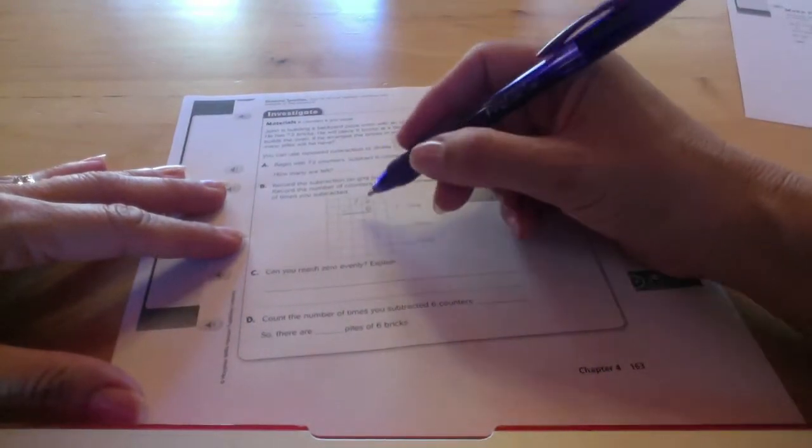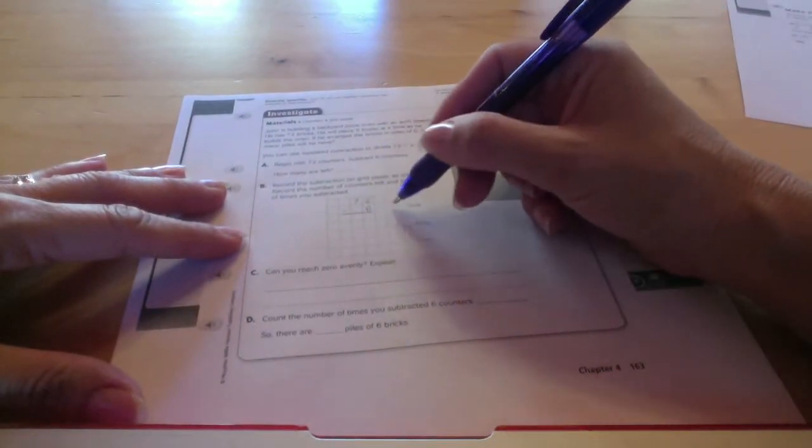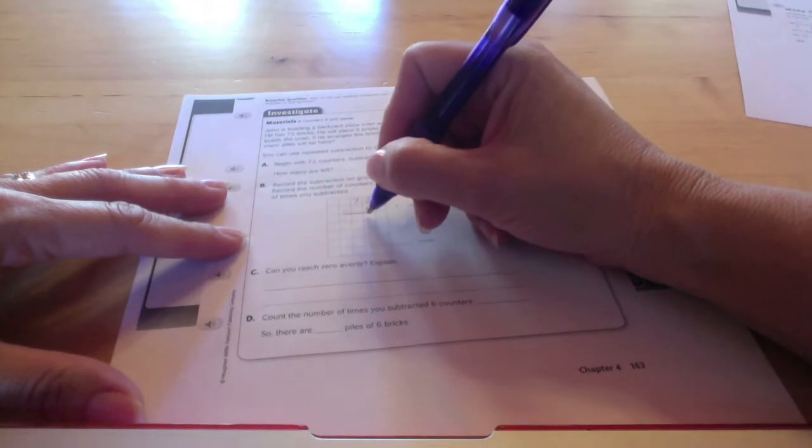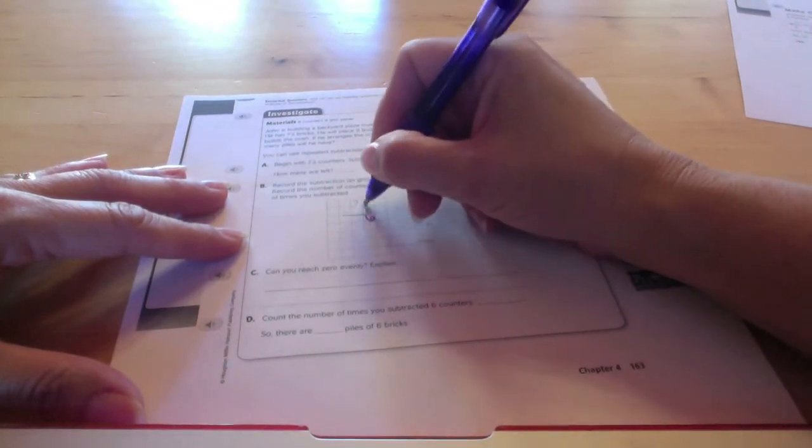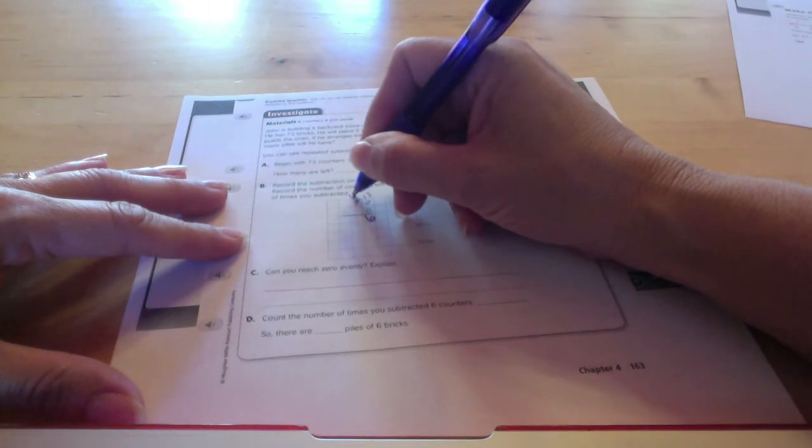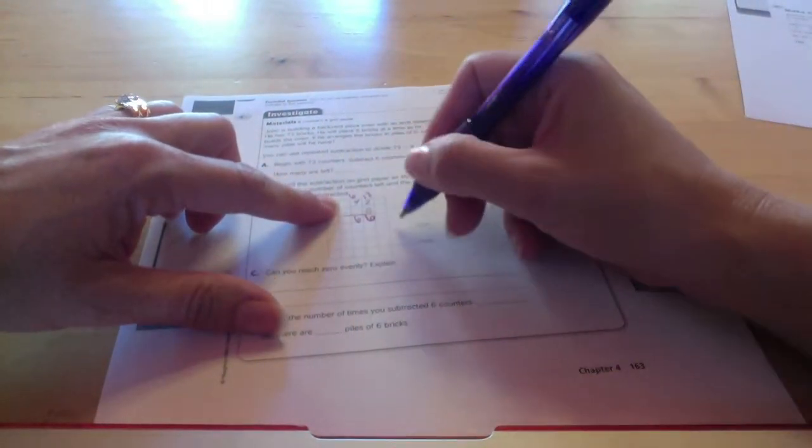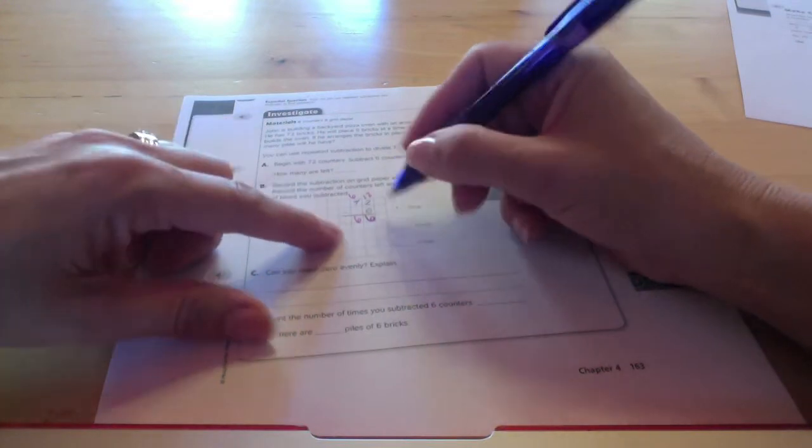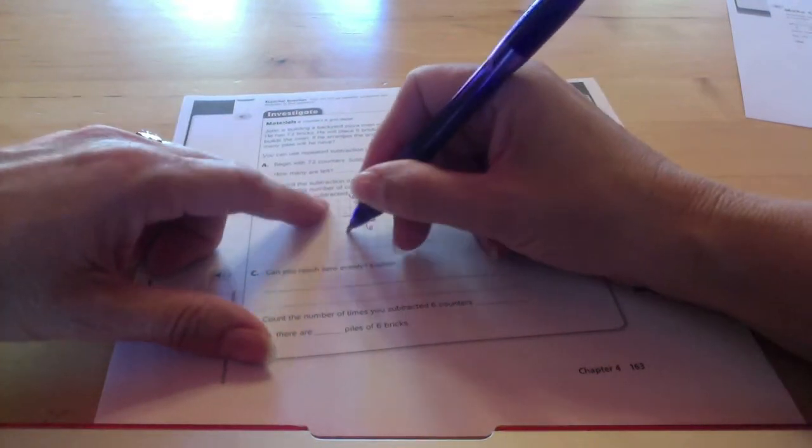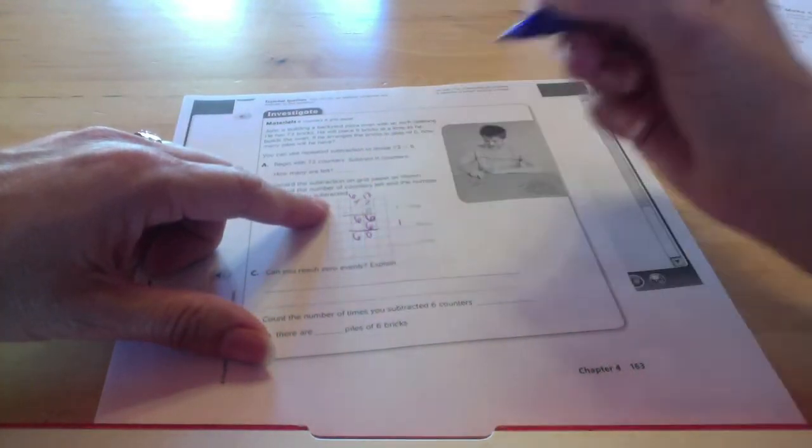Okay, so we're going to start subtracting six one time, and that should give us six. This was 12, and this is now six, so 66. Then we're going to subtract six again, and we'll end up with 60.